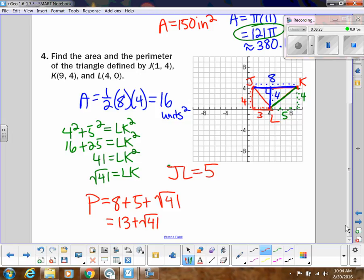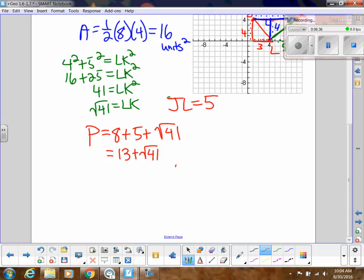Let's see, if we had to do a decimal version, then we could approximate that square root of 41, which is approximately 6.403. And then we can add that 13. So that would be 19.403 approximately for our perimeter. I prefer the exact answer, though.